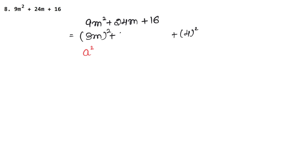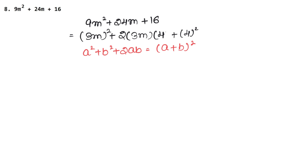Now we use the formula: a² + 2ab + b² = (a + b)². Here a is 3m and b is 4. Let's verify: 2 × 3 × 4 = 24. Yes, that matches. So the answer is (a + b)² = (3m + 4) whole square. Let's do the next question now.